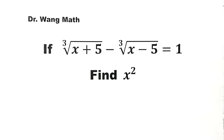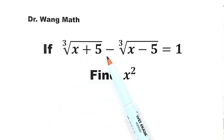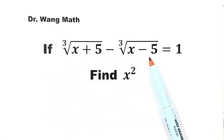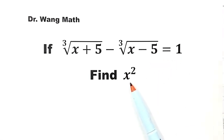In this video, we're going to solve a question from the Philippine Maths Olympiad. If the cube root of (x+5) minus the cube root of (x-5) equals 1, find x squared. So how do we solve it?